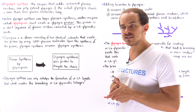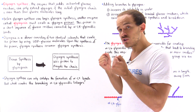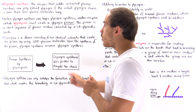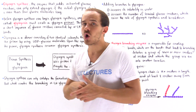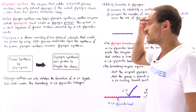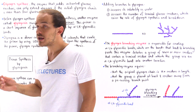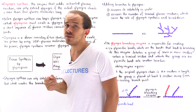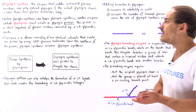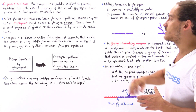The thing about glycogen synthase is it cannot simply begin from scratch. It actually requires a primer, and that primer has to be more than four glucose molecules long. So the question I'd like to begin in this lecture is: what exactly synthesizes that primer that allows glycogen synthase to begin the elongation process — to begin building that glycogen molecule and creating the alpha-1,4-glycosidic bond?